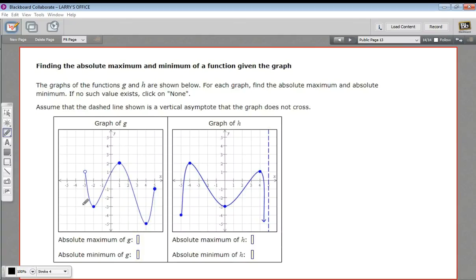In this problem, we're being asked to find the absolute maximum and minimum of a function from its graph. The absolute maximum or minimum, the absolute maximum would be the highest point the graph ever reaches, and the absolute minimum would be the lowest point the graph ever reaches.